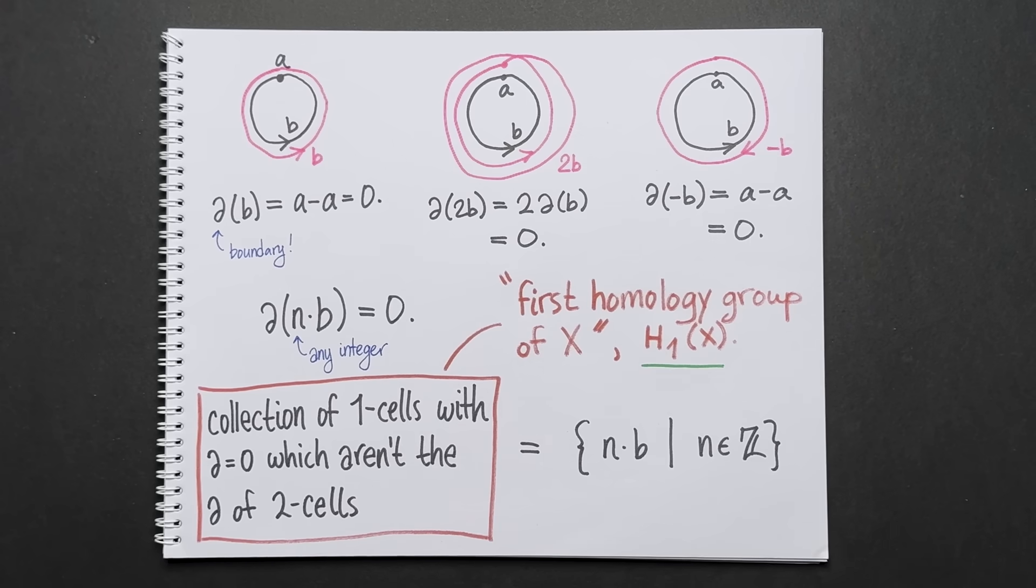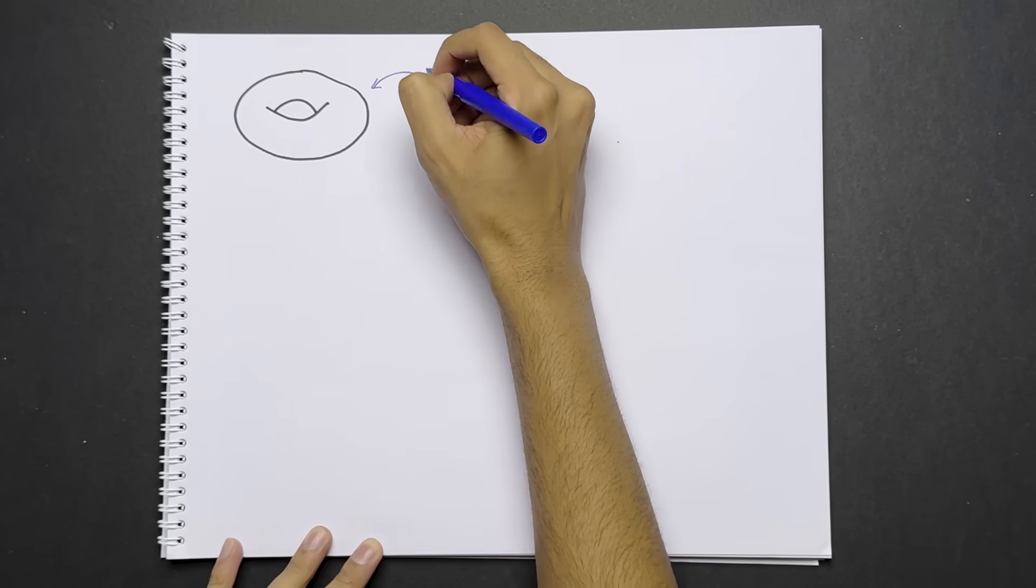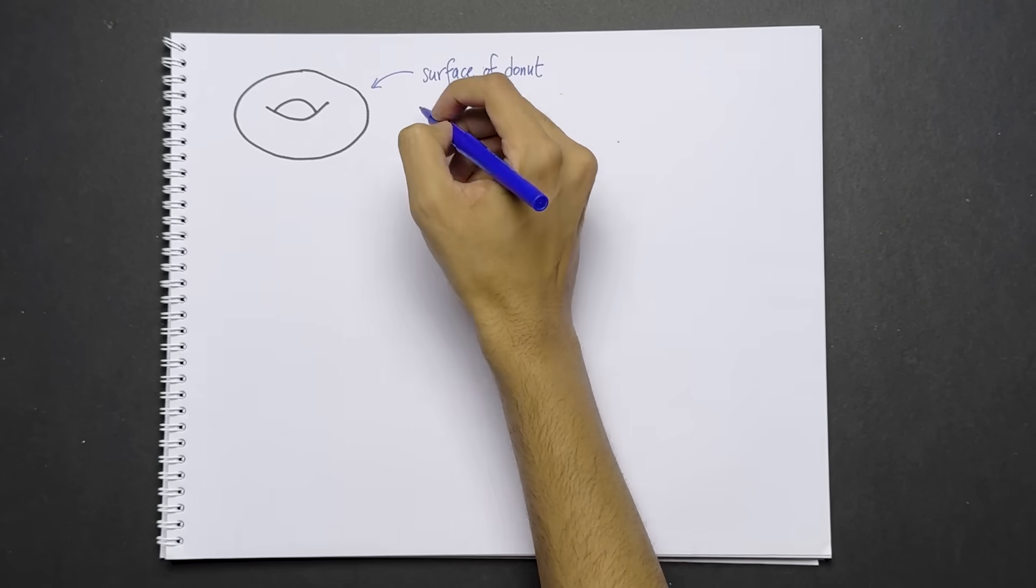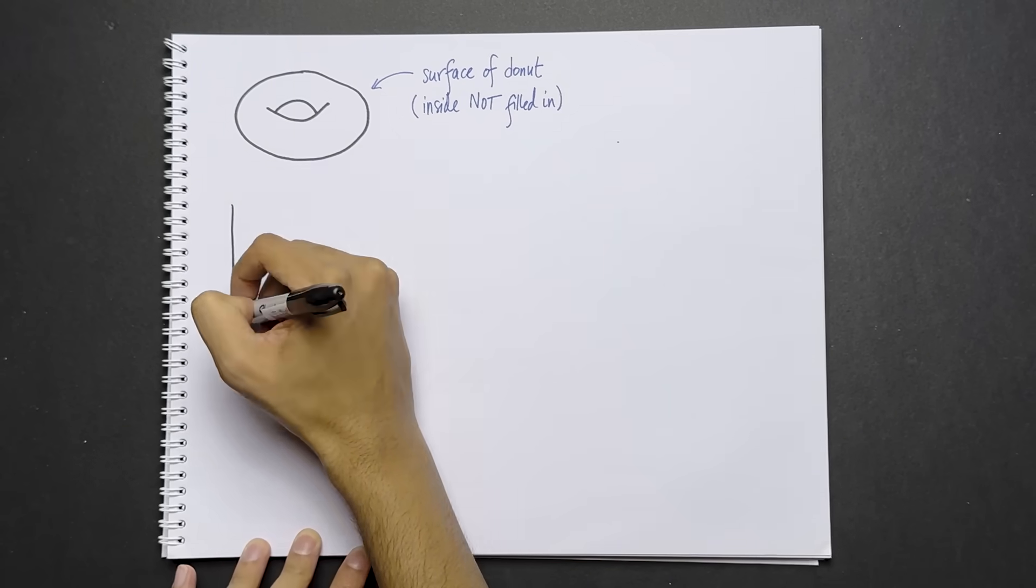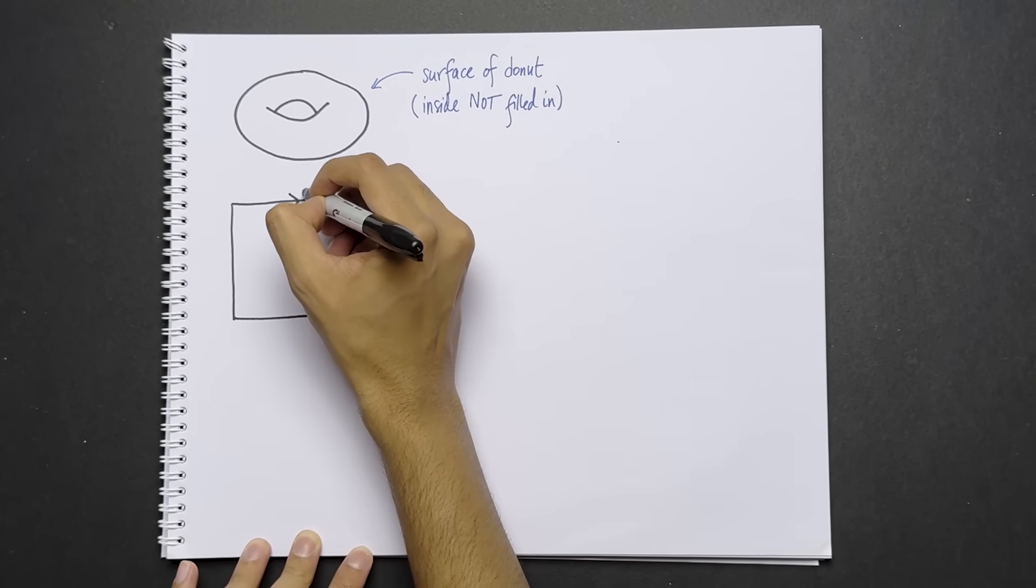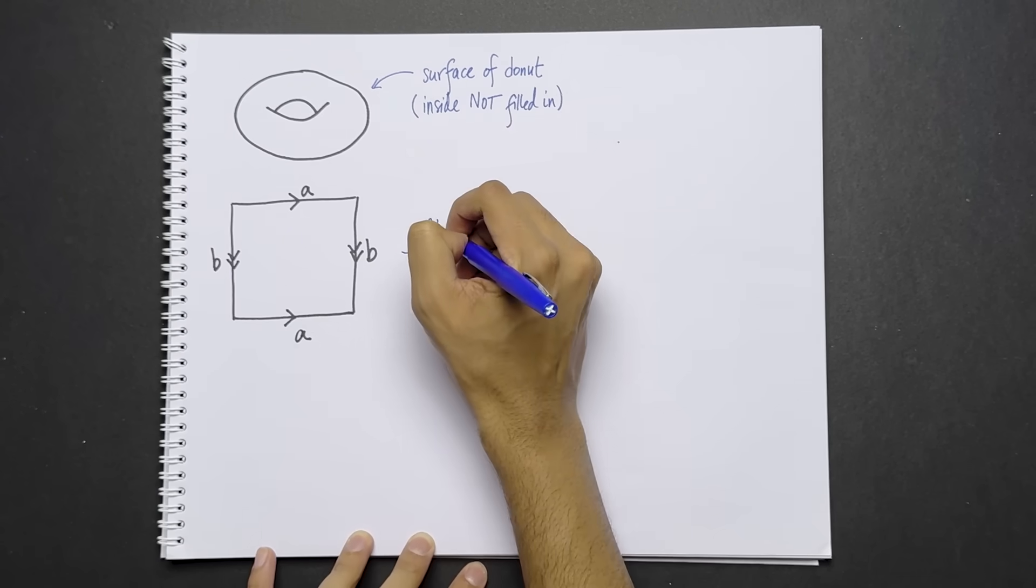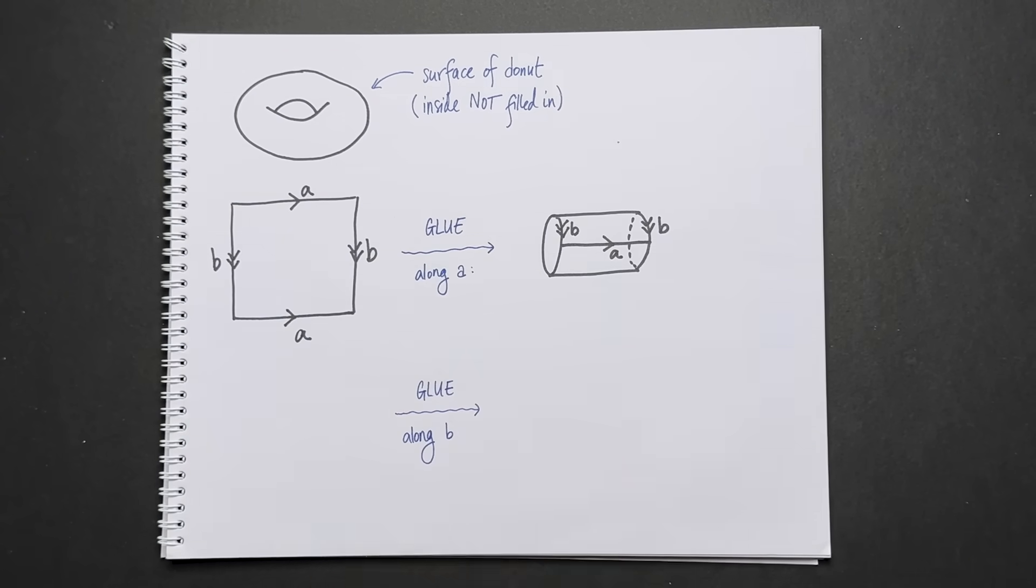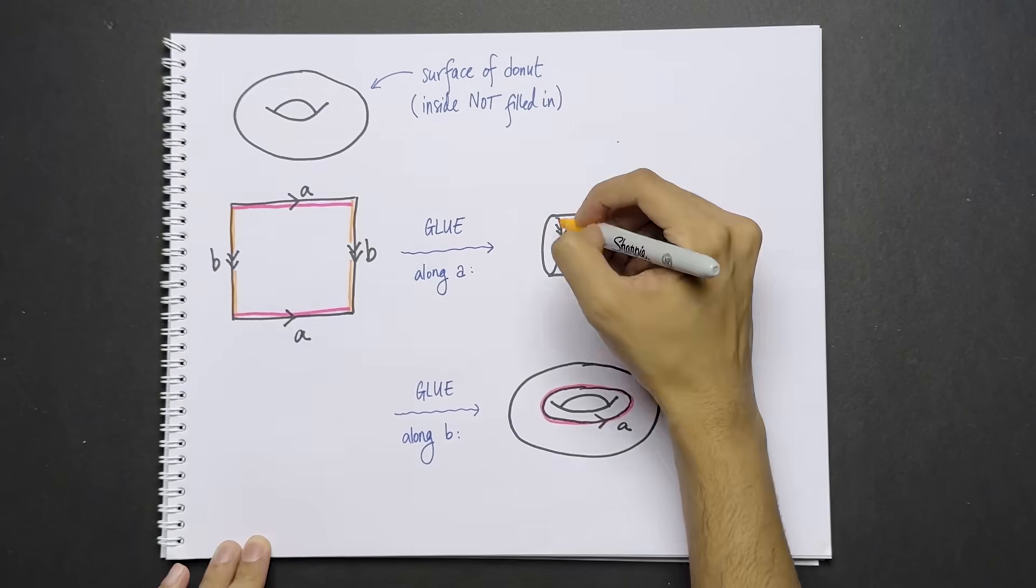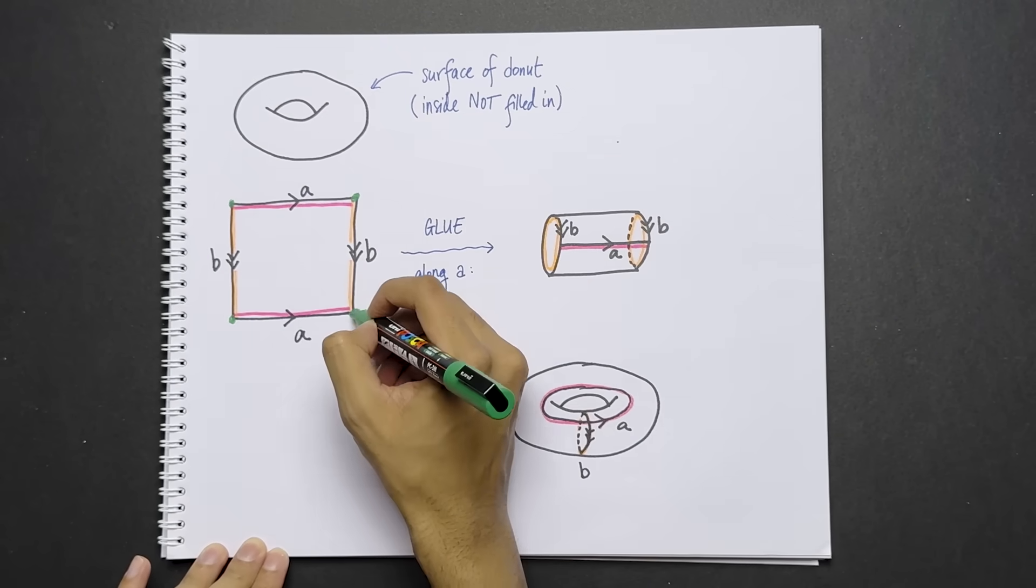So far, we've studied the homology of the circle. But things are slightly more complicated when we look at higher dimensional spaces, like the torus. This is the surface of a donut with the insides not filled in. First, we need to describe the torus as a collection of cells. Take a rectangle and label the sides as follows. First, glue along the side A. You get a cylinder. Then glue along the side B. You get a torus.